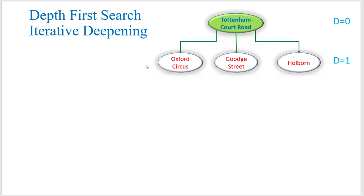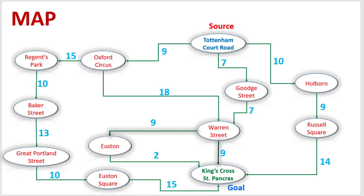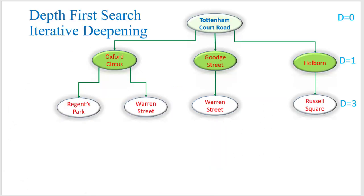Then we have to find out the next reachable from all these three nodes. From this node, these two nodes are next reachable. From this node, these two nodes are reachable. From this node, only this one node is reachable. And from here, this node is next reachable. So we create the tree like that and find out the next reachable.